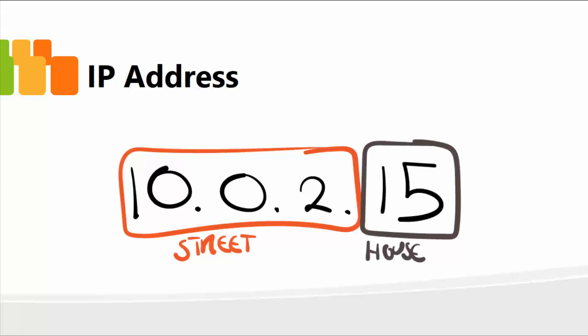Whenever two computers talk to each other or two devices communicate, each device has to have a certain address — just like we have addresses of our homes and we have streets, they have names, numbers, and so on. And each house is unique; no two houses have the same address. That's how you get your mail delivered through a postman, for example.